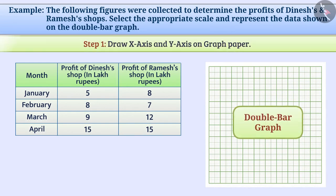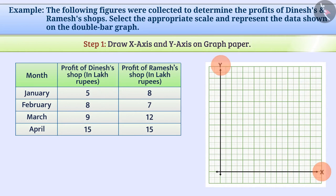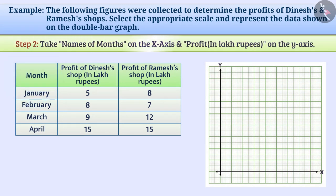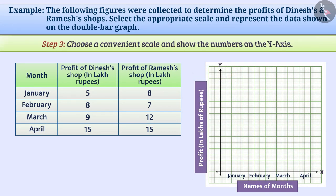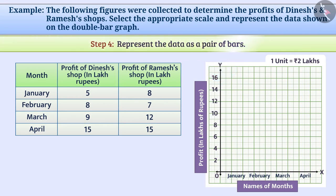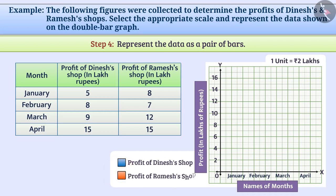First, we will draw two mutually perpendicular lines on the paper. Take names of months on the x-axis and profit in lakhs of rupees on the y-axis. For our convenience, we will choose a convenient scale. Here, we can take 1 unit equal to 2 lakh rupees. According to the scale, we will show the numbers on the y-axis. We will use one type of bar to show the profit of Dinesh's shop and another type of bar for showing the profits of Ramesh's shop.